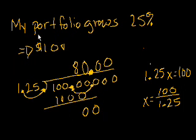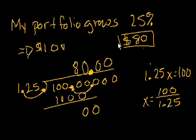So it turns out that if your portfolio grew by 25% and you ended up with $100, you started with $80. And that makes sense, because 25% is roughly 1 fourth, right? So if I start with $80 and I grow by 1 fourth, that means I grew by $20, because 25% of 80 is 20. So if I start with 80 and I grow by 20, that gets me to 100. Makes sense.